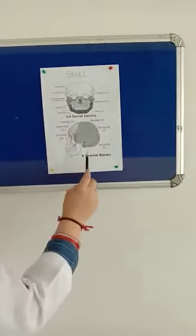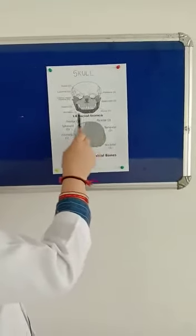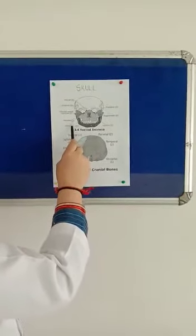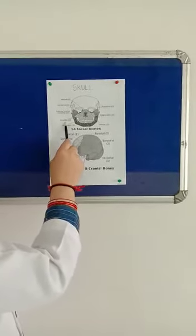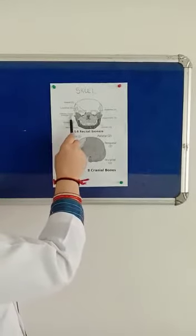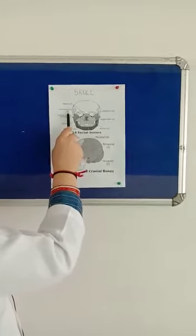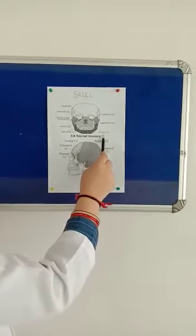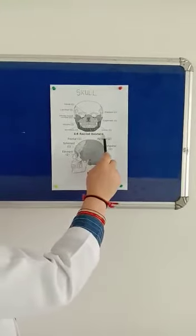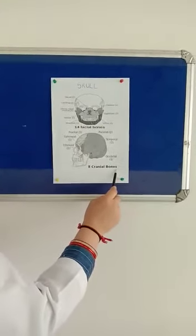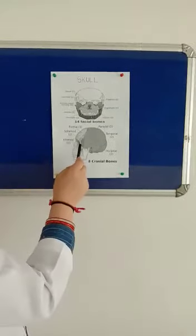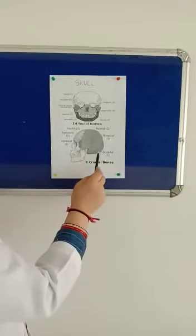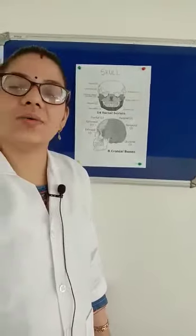As you can see, there are 14 facial bones which make up the face, and there are eight cranial bones. The facial bones are: one mandible, two maxilla, two inferior nasal concha, two lacrimal bones, two nasal bones, two palatine bones, two zygomatic bones, and one vomer bone — making up 14 facial bones. The eight cranial bones are: one ethmoid bone, one sphenoid bone, one frontal bone, two parietal bones, two temporal bones, and one occipital bone.